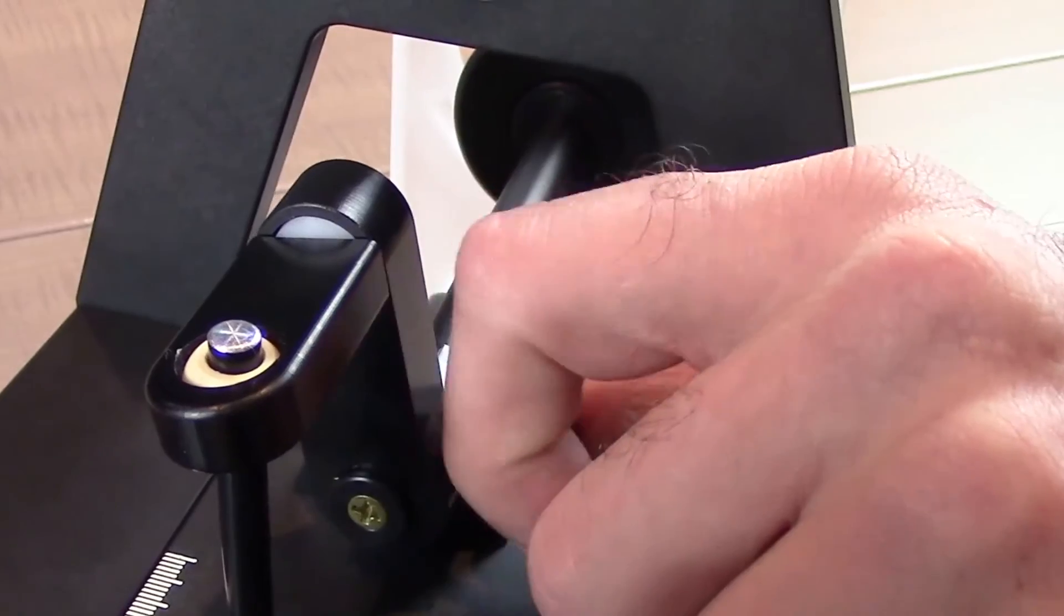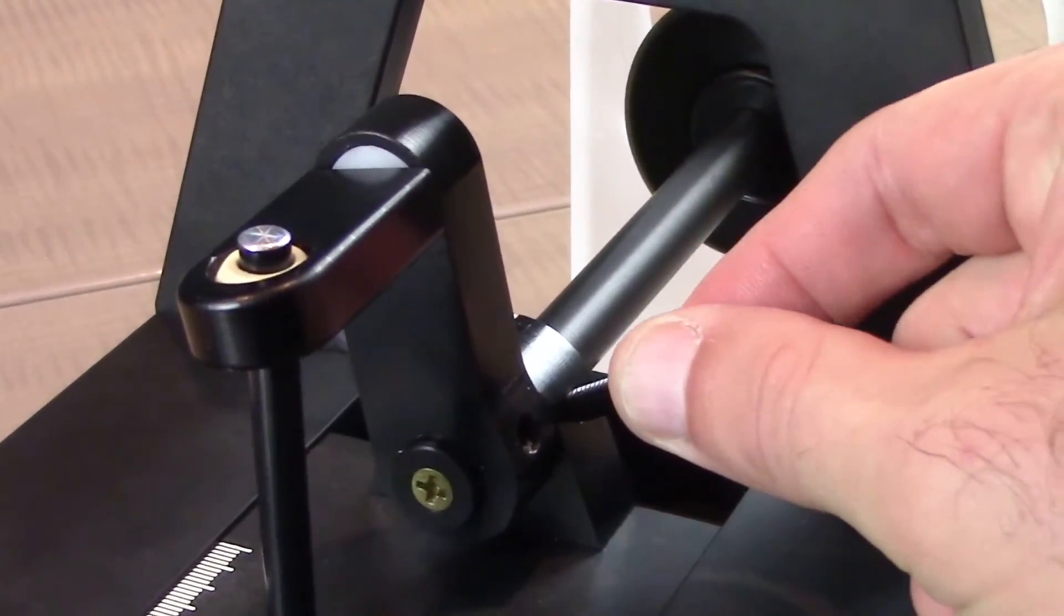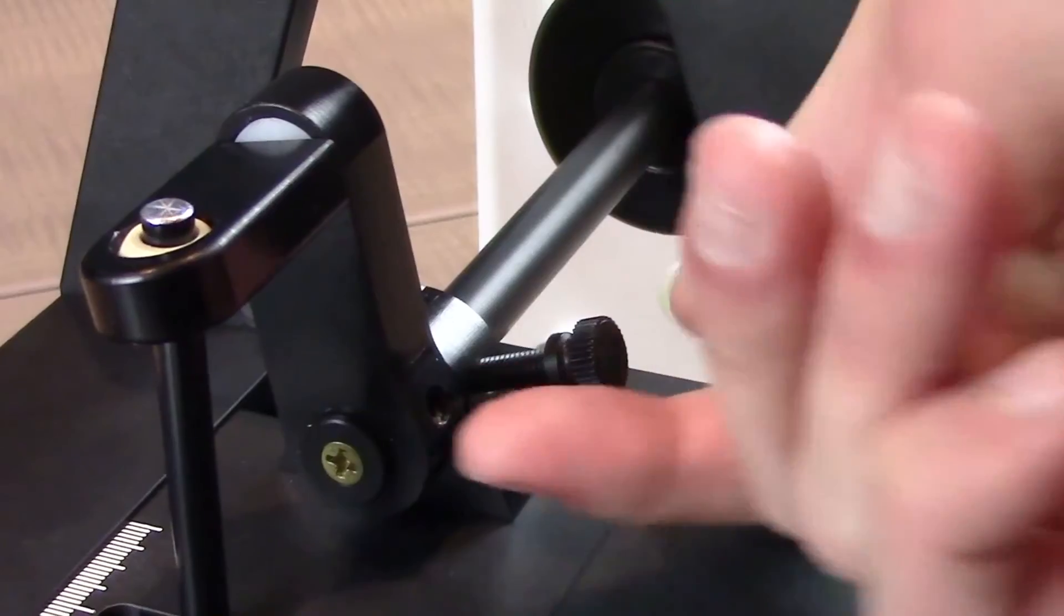Next, you will need to remove the thumbscrew from its current position and secure it into the threaded hole next to it. Do not over-tighten. The phantom is now ready for use.